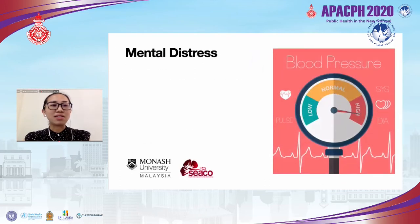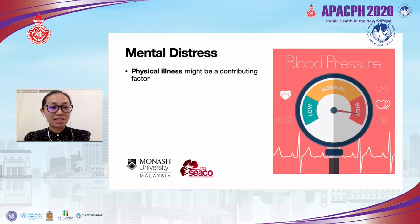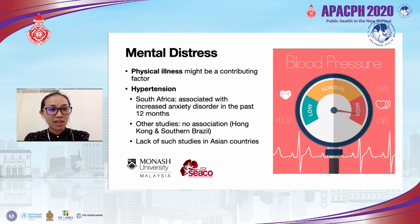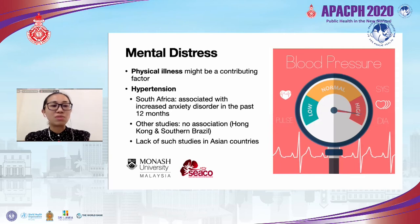Mental distress is complex and is influenced by many factors, one of which is physical illness. If you have a chronic illness that seems to have no end, you can easily become depressed. Our study focuses on hypertension. In South Africa, hypertension was found to be associated with increased anxiety disorder in the past 12 months. However, in studies from Hong Kong and southern Brazil, there was no association. There is a lack of studies on the association between mental distress and hypertension, especially in Asian countries.